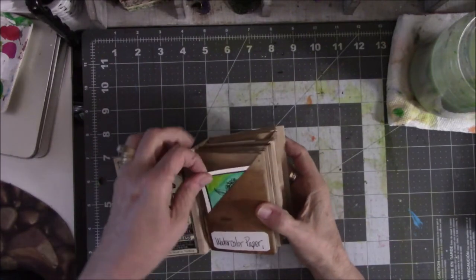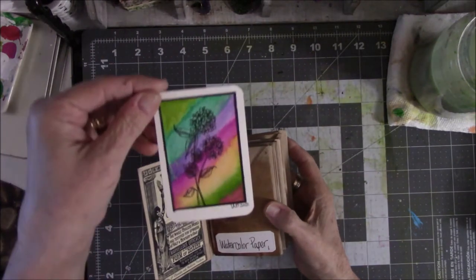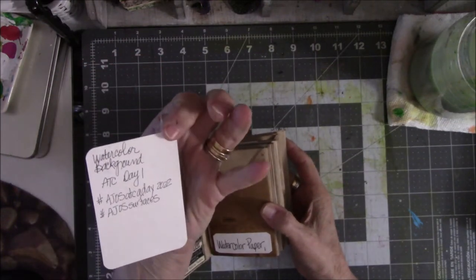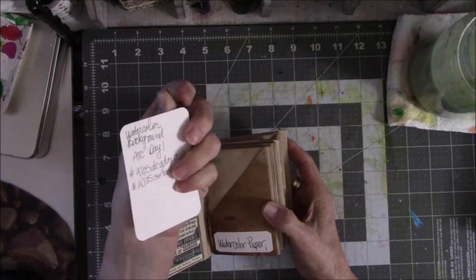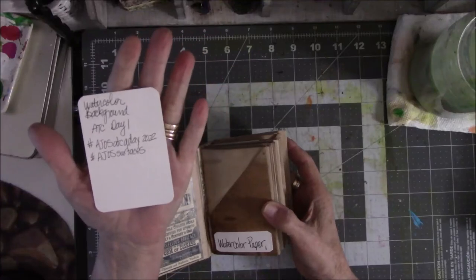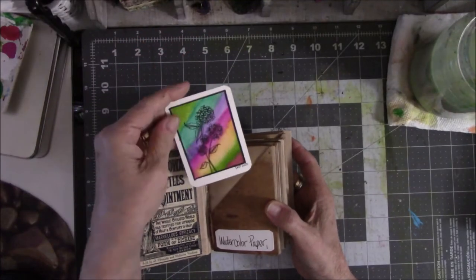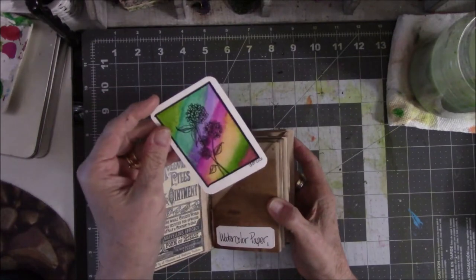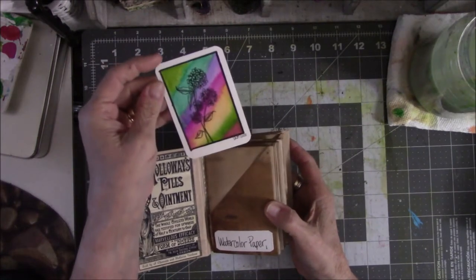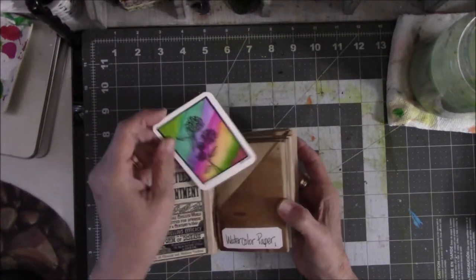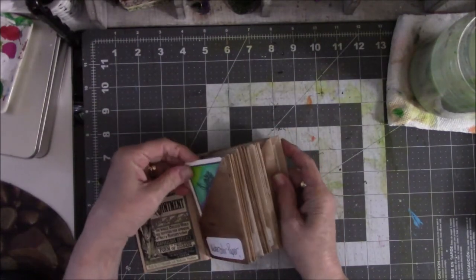Here's the first one. The first one was watercolor paper. A lot of these are done on old business cards that I've been using for the last four or five years to do ATCs because I want to get rid of them but don't want to throw them away. This one is just watercolor paper with rounded corners.